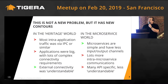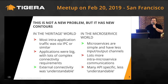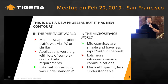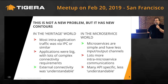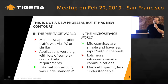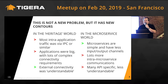One reason we're talking about this now is it's an existing whole problem, but it's got some new conflicts. That's because we're in this new microservice containerized world. I thought I'd call up some of the differences between getting visibility in your network in the heritage world - because 'legacy' has such bad connotations, we'll call it the heritage world - and in your new microservice world.